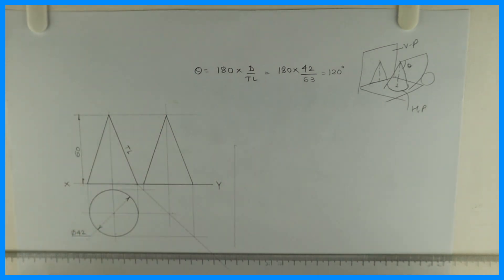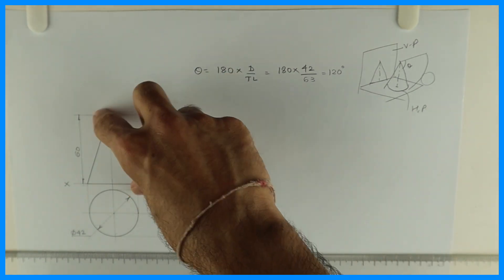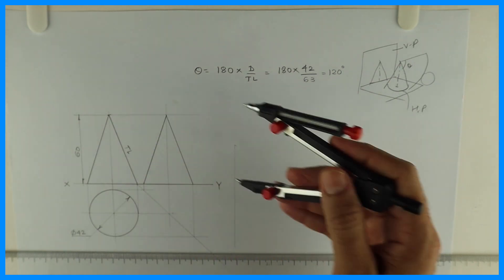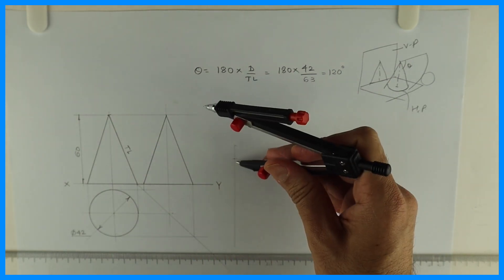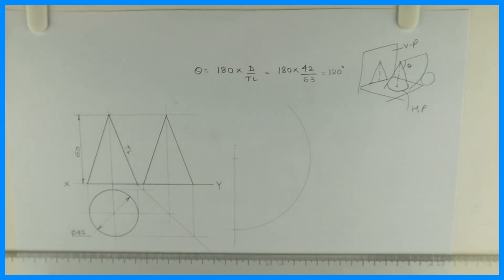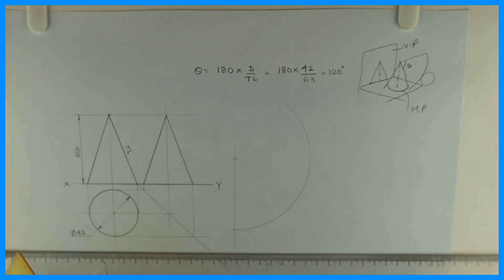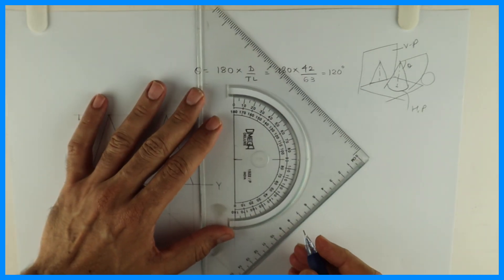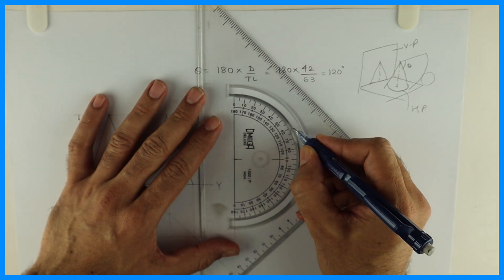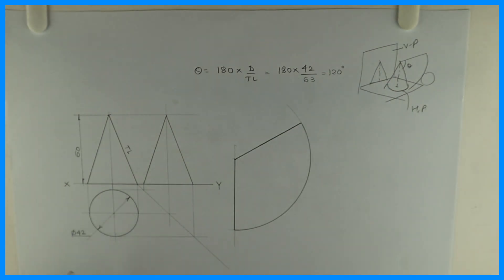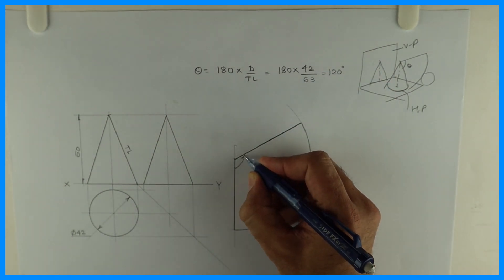So what we need to do, first we will draw one line. We will mark true length on it. This true length, we can take it anywhere but I will prefer taking vertical. Take this vertical line, cut true length on it. Then you rotate. Now this angle is how much? 120 degree. So you take protractor and you mark 120 degree. So this is theta.